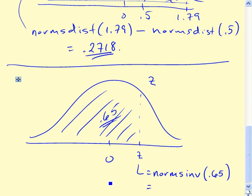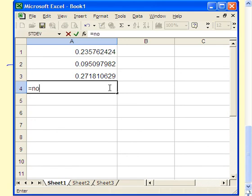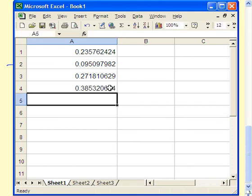So let's pull up Excel and see what it says. NORMSINV and 0.65, enter. And sure enough, we do get a positive number, right about 0.3853.